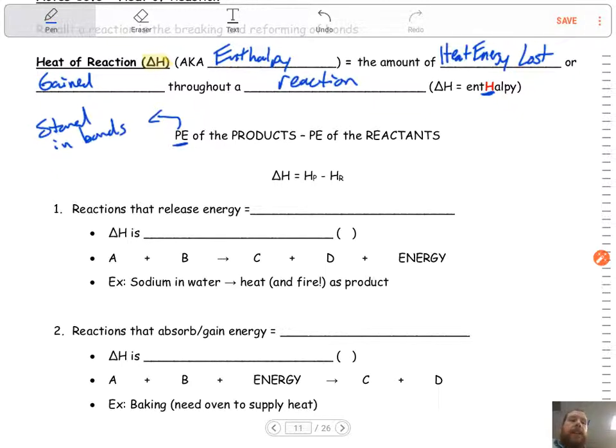Same idea here. It's the products, which are the final piece because they come at the end of the reaction, minus the reactants, which is the initial. And that's going to give us delta H.